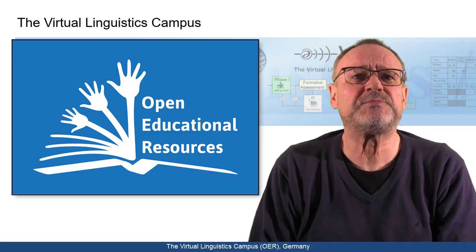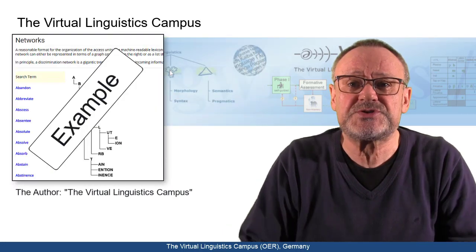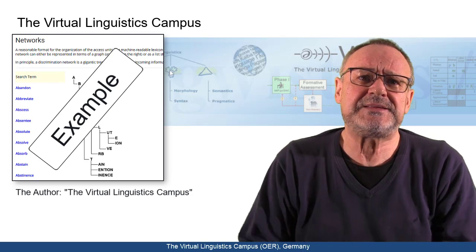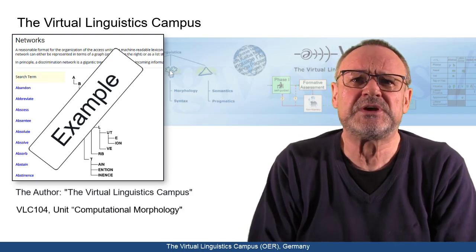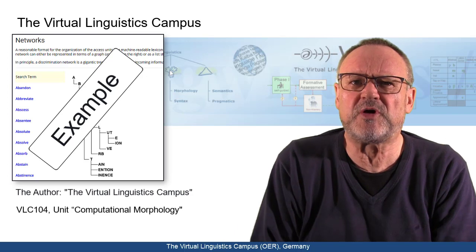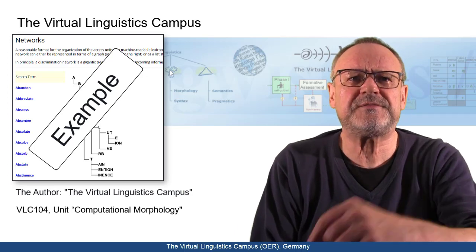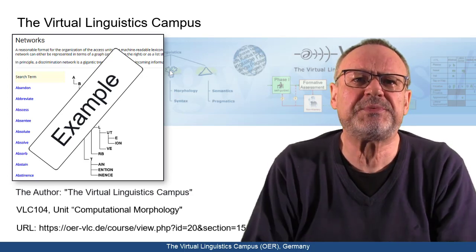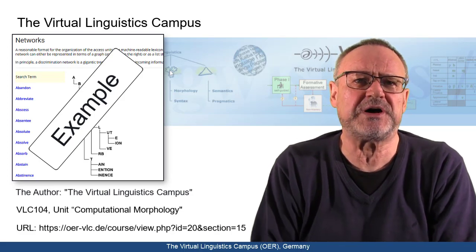All you have to mention is the author, which is of course the Virtual Linguistics Campus, the exact reference — for example, VLC 104 Unit Computational Morphology — and the URL of that reference, which can be copied from your browser's address bar.